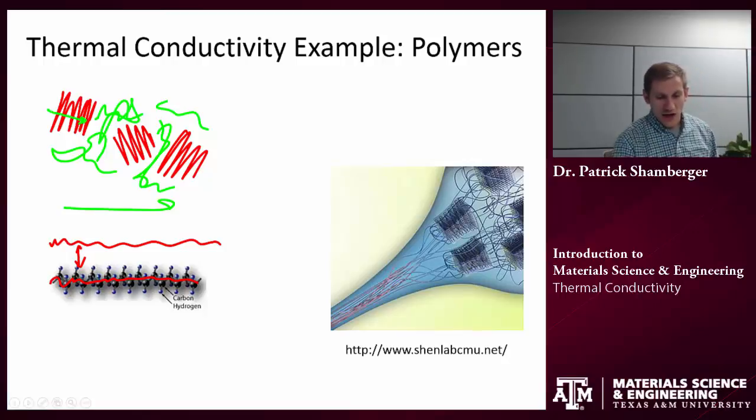So if I'm flowing heat in this direction, for example, I'm looking at heat that's going from chain to chain. So these are those weaker secondary bonds. These are relatively weak soft bonds, so heat does not flow very readily through them.